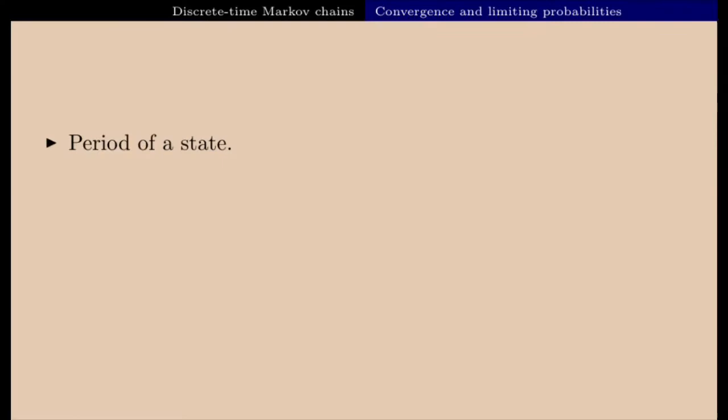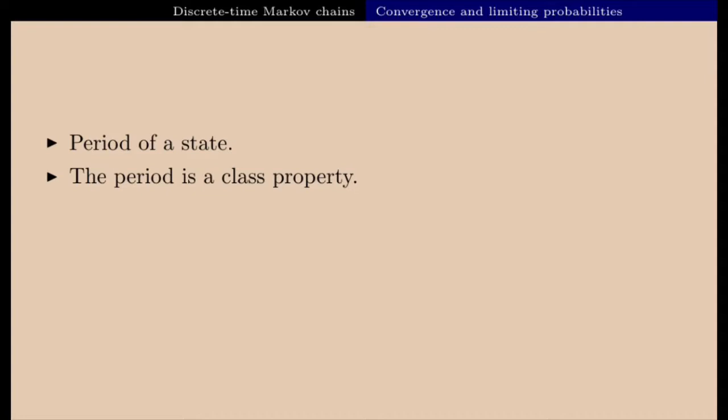Here is the plan I am going to follow. First, I will talk about the period of a state and define this notion. We will also prove that, exactly as for transience, recurrence, null recurrence, or positive recurrence, the period is also a class property. So all states in the same communication class must have the same period, which allows us to define the notion of an aperiodic Markov chain — that is, an irreducible Markov chain for which all states have period one.